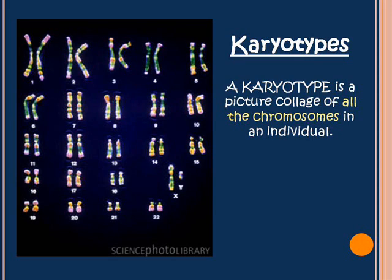Here's a picture of a karyotype. A karyotype is just a picture collage of all the chromosomes of an individual. What they'll do is take your DNA and get the chromosomes to line up in their homologous pairs so that you can see that this person has two copies of chromosome one, two copies of chromosome two, etc.